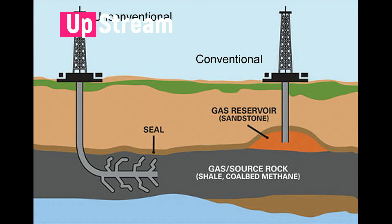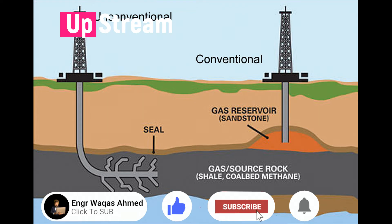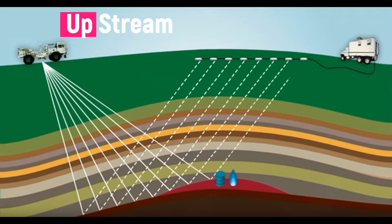The exploration and production, or upstream segment, is the earliest portion of the oil and gas production process. Companies within this segment are primarily focused on locating and extracting commodities from the earth. The exploration stage involves the search for hydrocarbons, which are the primary components of petroleum and natural gas. Land surveys are performed to help identify the most promising areas, with the goal of estimating the amount of oil and gas reserves underground.